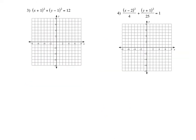Problem 3: looking at the equation x + 1 squared plus y − 1 squared equals 12. This is going to be a circle — you know that because it's a square plus a square equals a number. So r squared equals 12. The center for this is at (−1, 1), and the radius is the square root of 12, which is about 3.5.